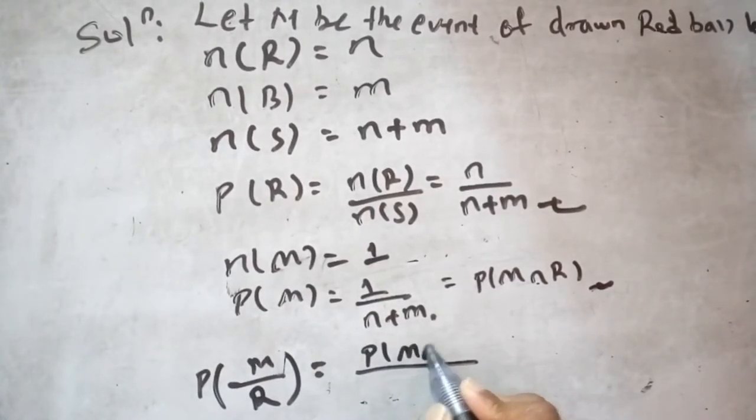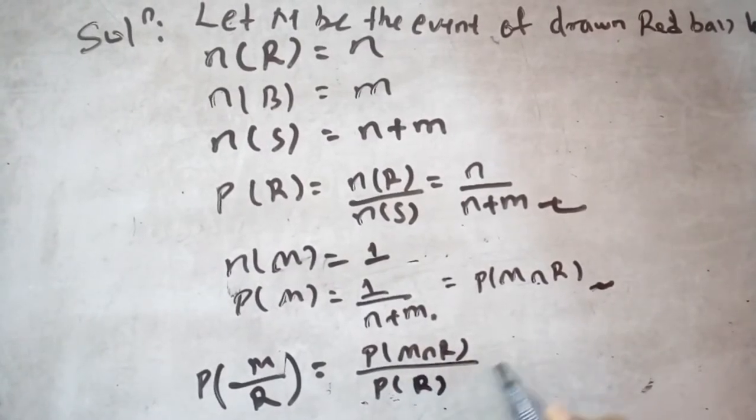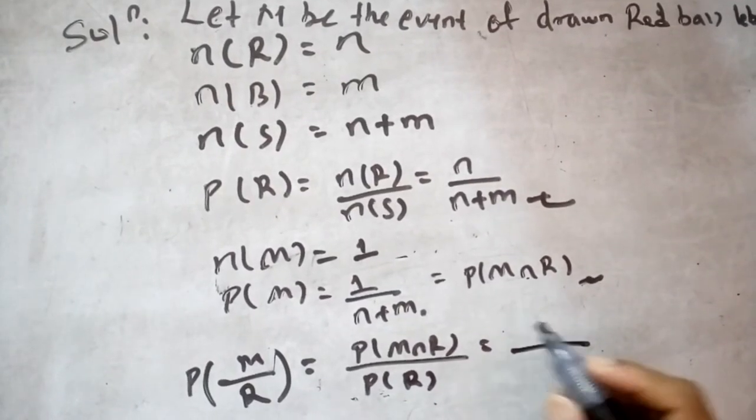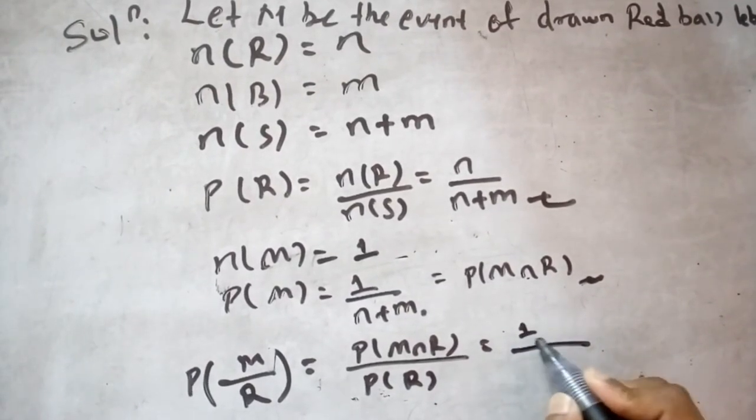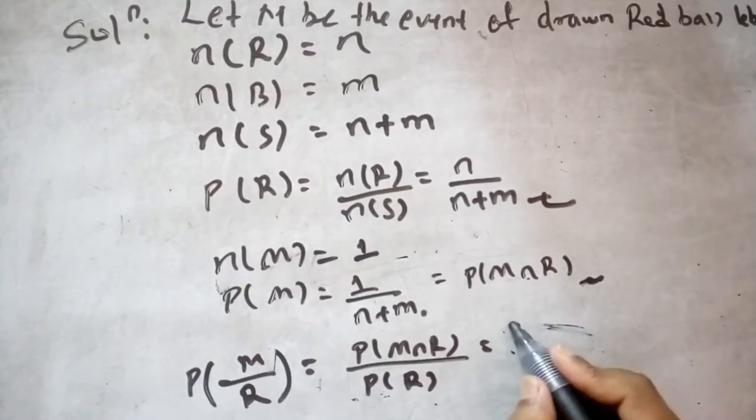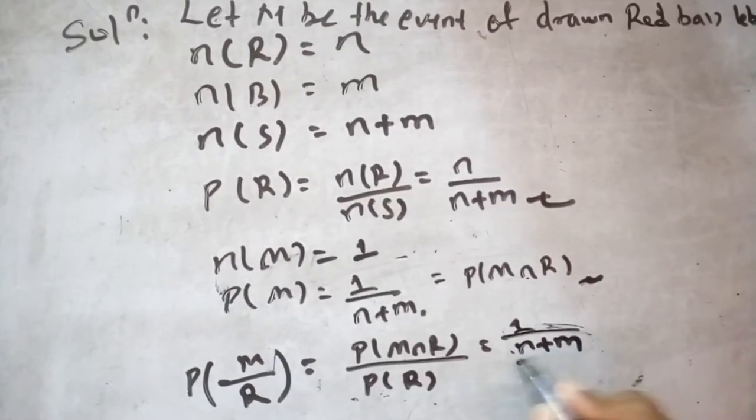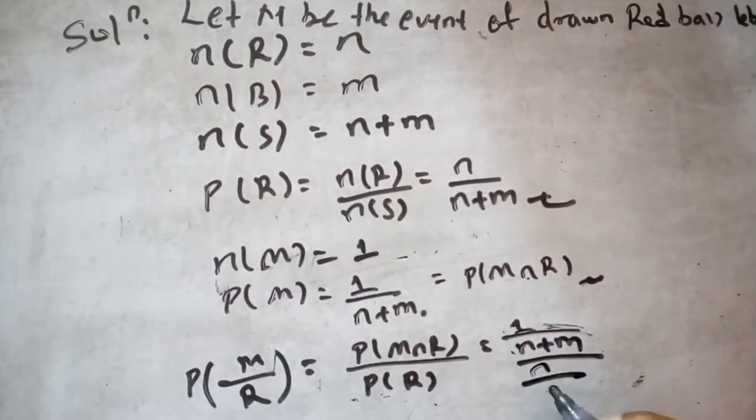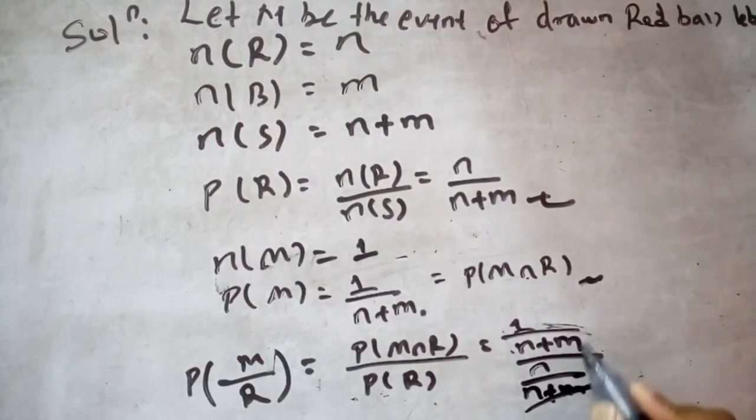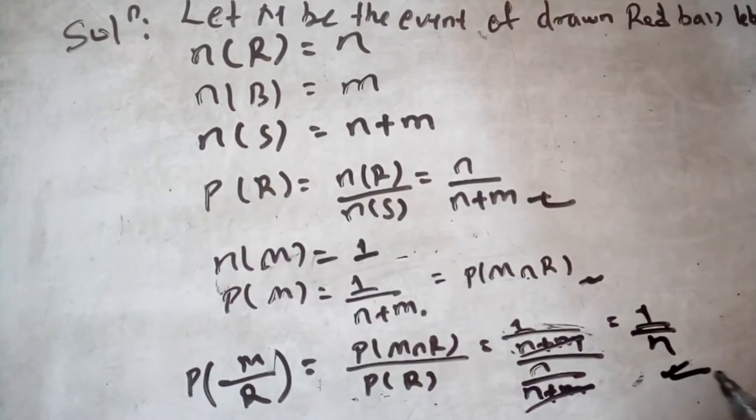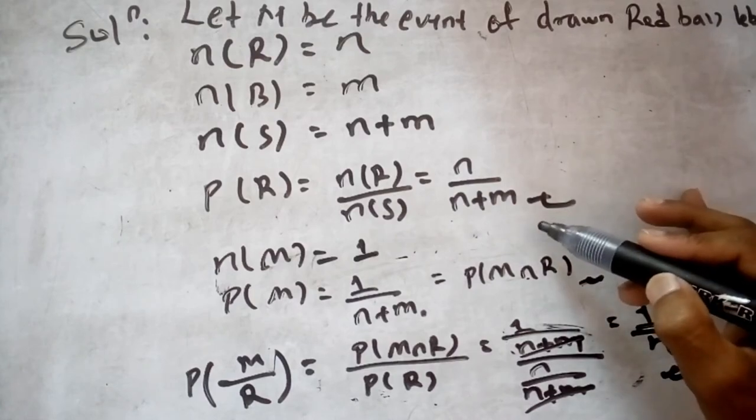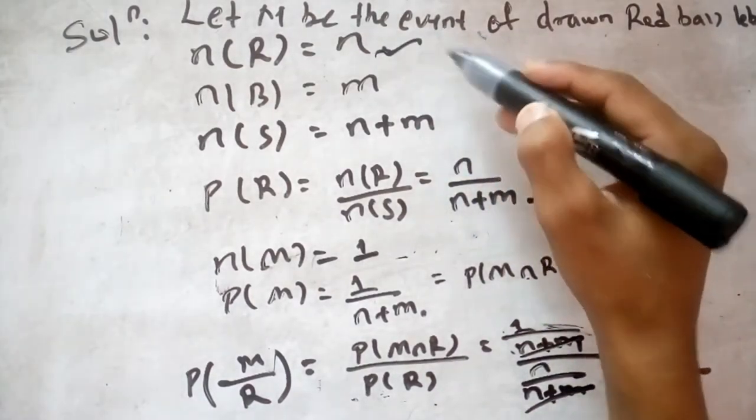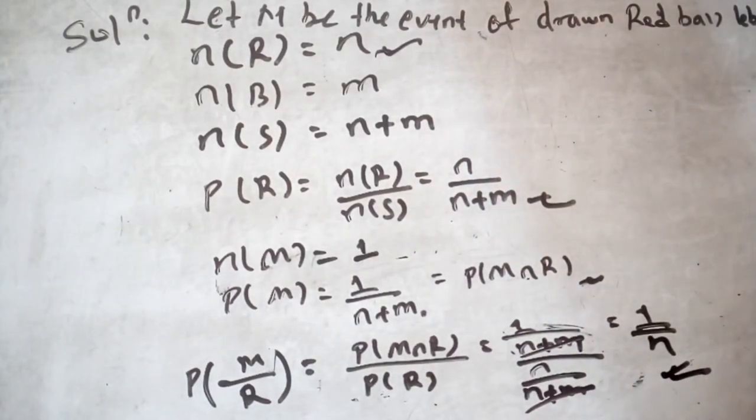This is probability of M intersection R by probability of R. This is 1 by n plus m, probability of R equals n by n plus m. This cancels to 1 by n, which is our answer. Thank you.